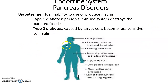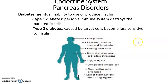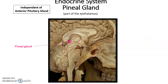Type 2 diabetes is where the cells that are supposed to take up glucose become less sensitive to the insulin hormone, so the pancreas has to produce higher and higher levels of insulin to get the same response. This cycle keeps occurring until eventually the pancreas cannot produce enough insulin and is unable to regulate glucose levels properly. Symptoms of diabetes can include blurry vision, increased thirst, frequent urination, fatigue, recurring skin, gum, or bladder infections, dry itchy skin, slowly healing cuts and bruises, and loss of feeling or tingling in the feet.